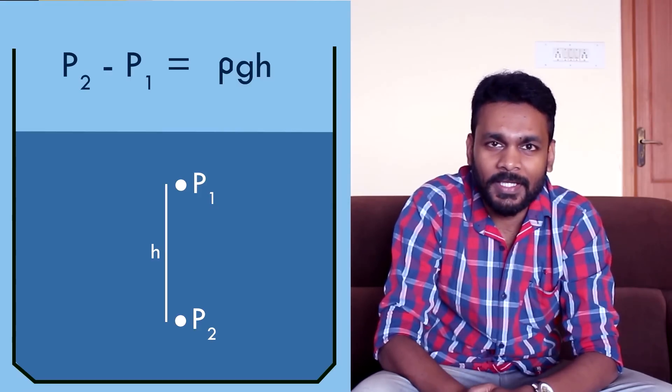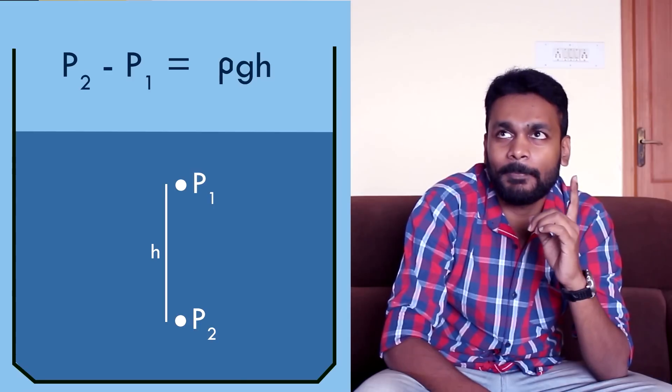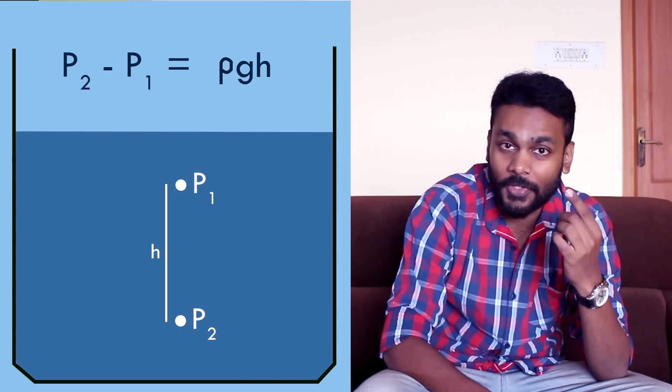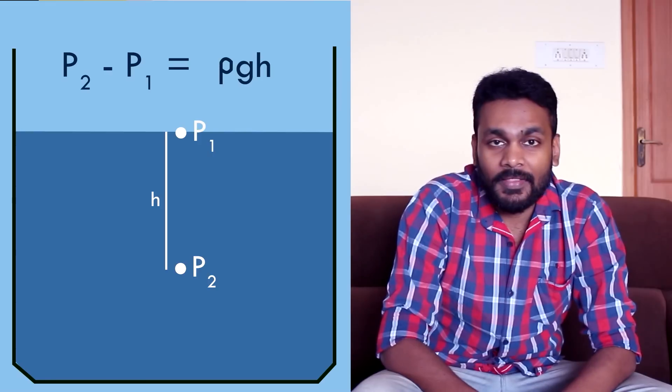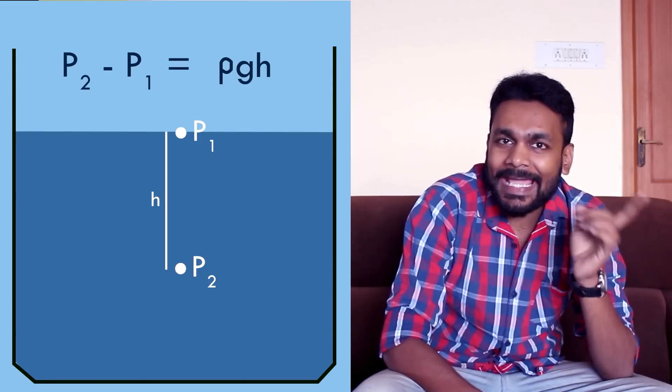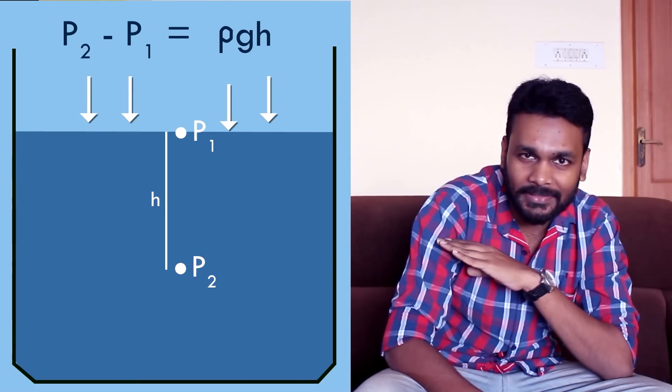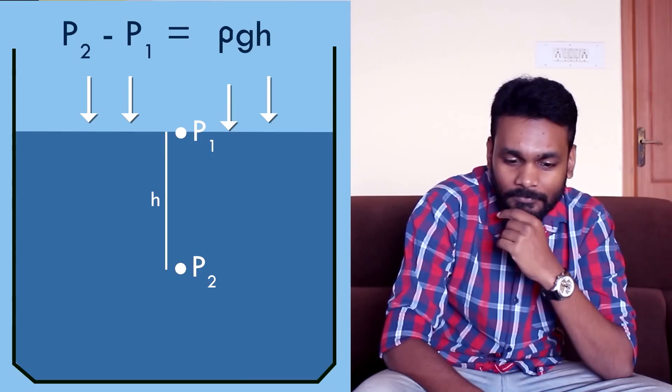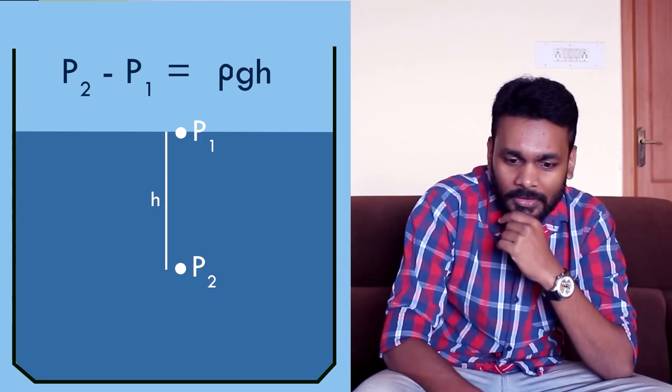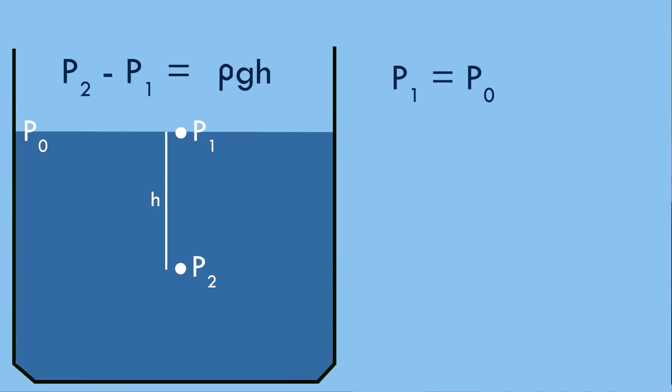That's simple enough. So if that's true, then suppose I move the point such that p1, which is the top point, is now at the surface. Then what would the pressure at p1 be? We know that air is a fluid, so it must exert some pressure at the surface of this fluid. Let's call that the atmospheric pressure p0. So the pressure p1 is equal to p0, and that must mean that the pressure p2 is equal to p0 plus ρgh.